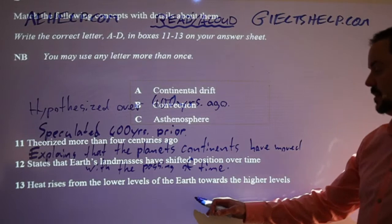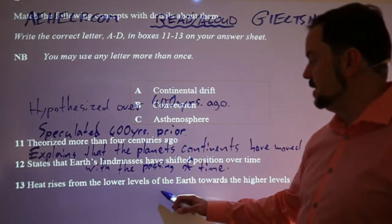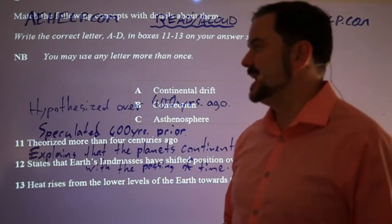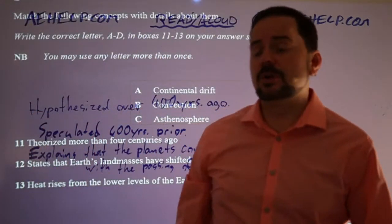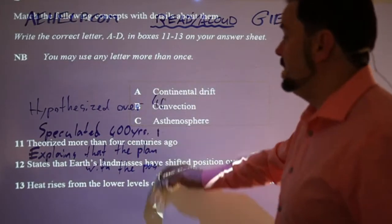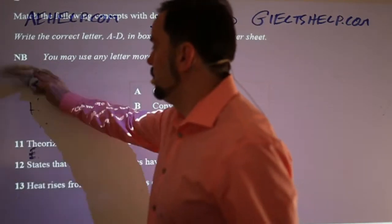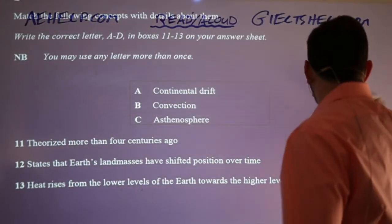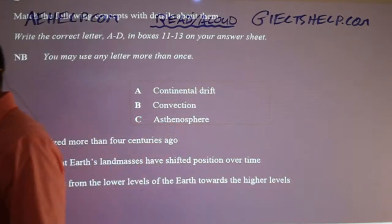Number 13: 'heat rises from the lower levels of the earth towards the higher levels.' My paraphrase: 'higher temperatures move from below the earth to above the earth.' Anytime you have matching information questions, do this kind of paraphrasing — it helps you engage with the information, pay attention, and be more accurate when you see the answer in the text. It's a good way to improve your score, accuracy, and also your lexical resource — your vocabulary.